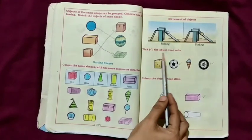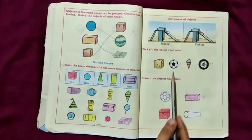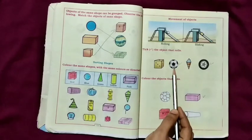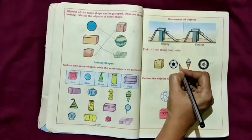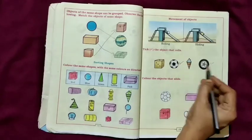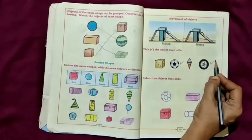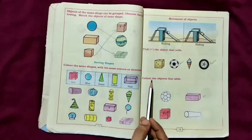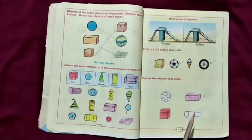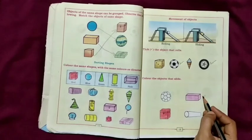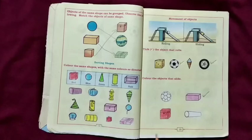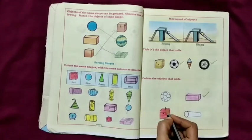Take the object that rolls. This ball will roll, take near. This wheel will roll. Color the object that slides. Which object will slide? The object that has flat surface. This cuboid will slide. This cube will slide.